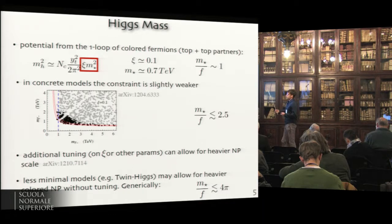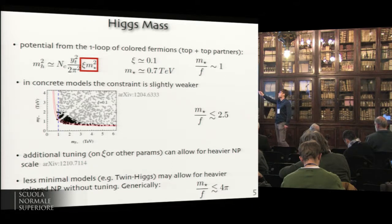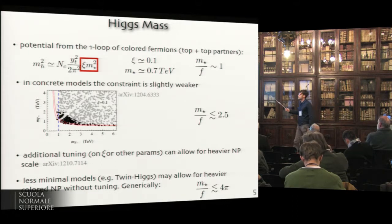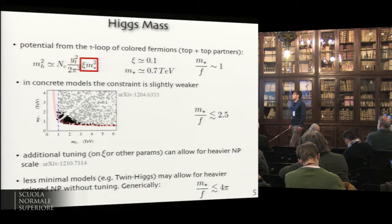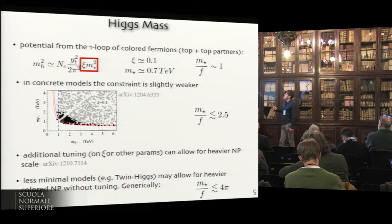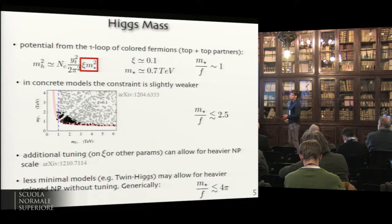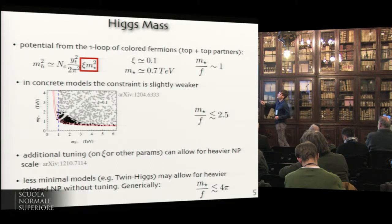These resonances, which need to cancel the top quark loop, are called top partners. They are expected to be somewhat light — for 10% tuning, we expect them to be of order 0.7 TeV. Being a bit more precise with a particular calculable model, this relation can be slightly relaxed and the partners can be somewhat heavier, around 1.7 TeV. If we don't see them at 1.7 TeV, that means XI should be smaller and the model is more tuned.